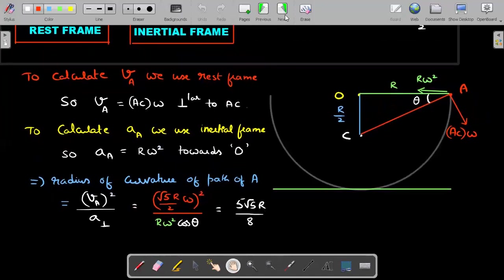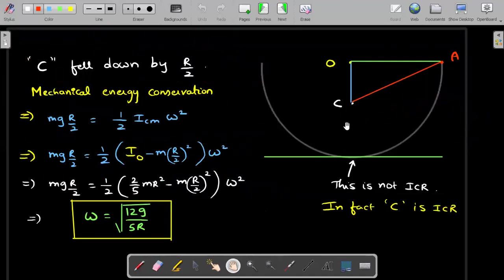The last thing that is left out is to solve for omega. What's the value of omega? I think you should have guessed work energy theorem is the way to go. By the time this particular configuration is reached, C would have fallen down by a distance of R by 2 that you can clearly check. Mechanical energy conservation from start to the end produces MgR by 2 loss in potential energy should be equal to gain in kinetic energy. Now very important thing that you should realize is this bottom most point is not the ICR. This is actually slipping because there is no friction. And we realized who is the rest frame among all of this in this particular instant: center of mass, which is the beauty of this question. In fact, C is the ICR in this particular problem.